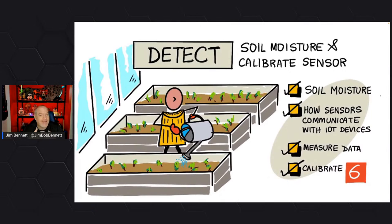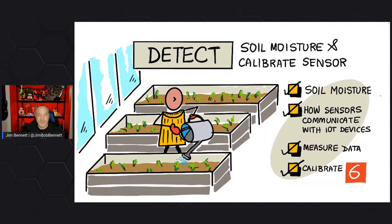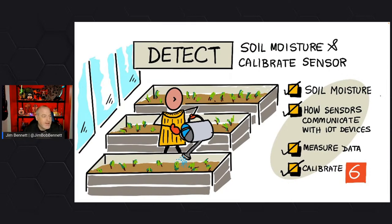This is all about the Internet of Things, so it's not just about how you connect a device to Azure IoT Hub. We're focusing on a lot of the core concepts of IoT that you need to know as an IoT engineer. We're going to look at soil moisture, how sensors communicate with IoT devices, the various ways IoT hardware can communicate, and sensor calibration. The goal is to give you all the knowledge you need to start thinking about large IoT applications.